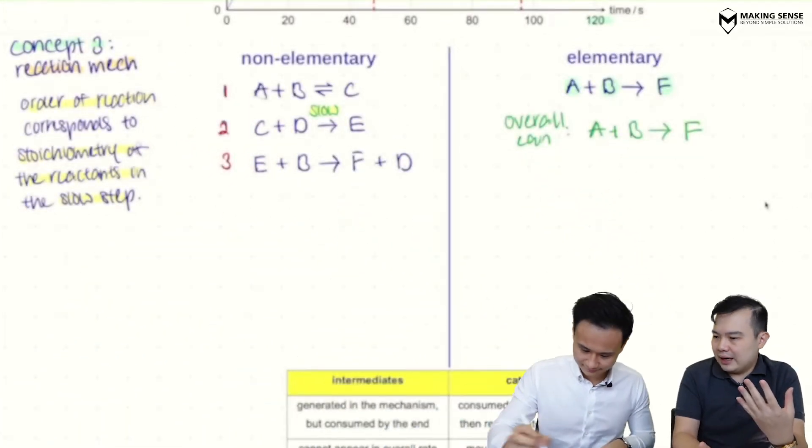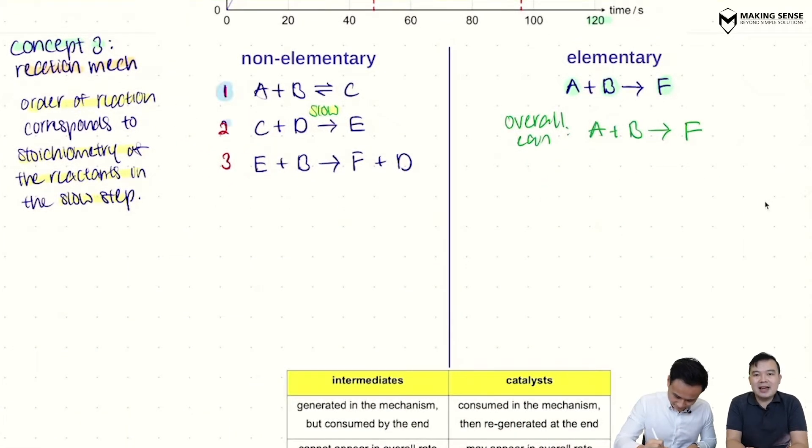They usually occur through a series of steps. They become some other random things first before becoming the product. So that whole series of steps is what we call a reaction mechanism. And for reaction mechanism, we have an example over here. This is going to be a mechanism of three steps.